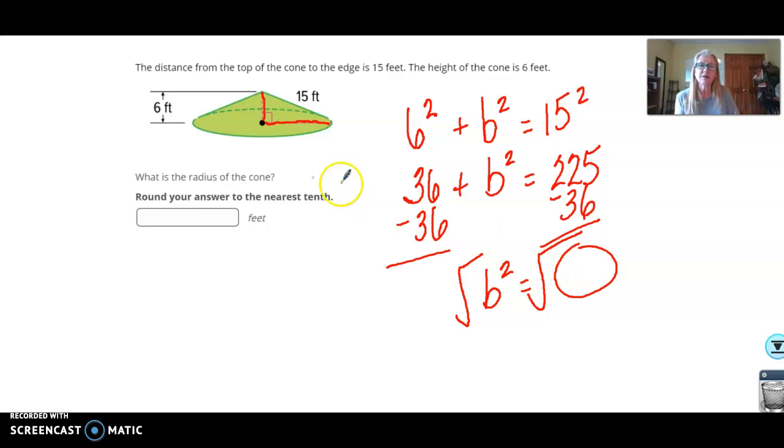It does say round your answer to the nearest tenth. That means whatever our answer is, we want to have only one number after the decimal. So, make sure you do that because computers are very picky. If it says round it to the nearest tenth, you better believe it wants it to the nearest tenth.